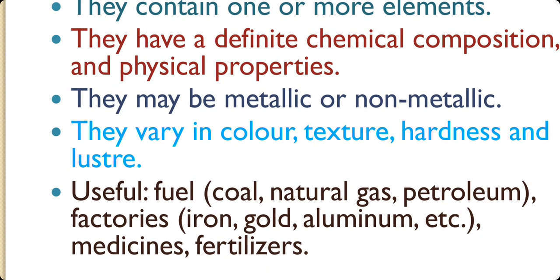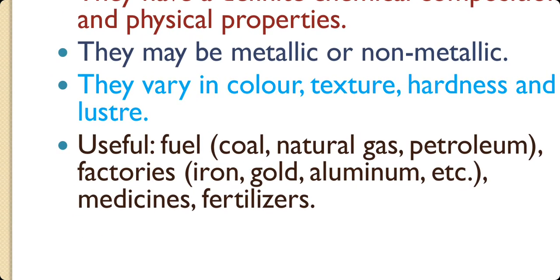The examples of metallic minerals are iron, gold, copper, silver, etc. And non-metallic are silica, carbon, etc. The minerals vary in color and texture, hardness and lustre. They are useful for various activities on earth.